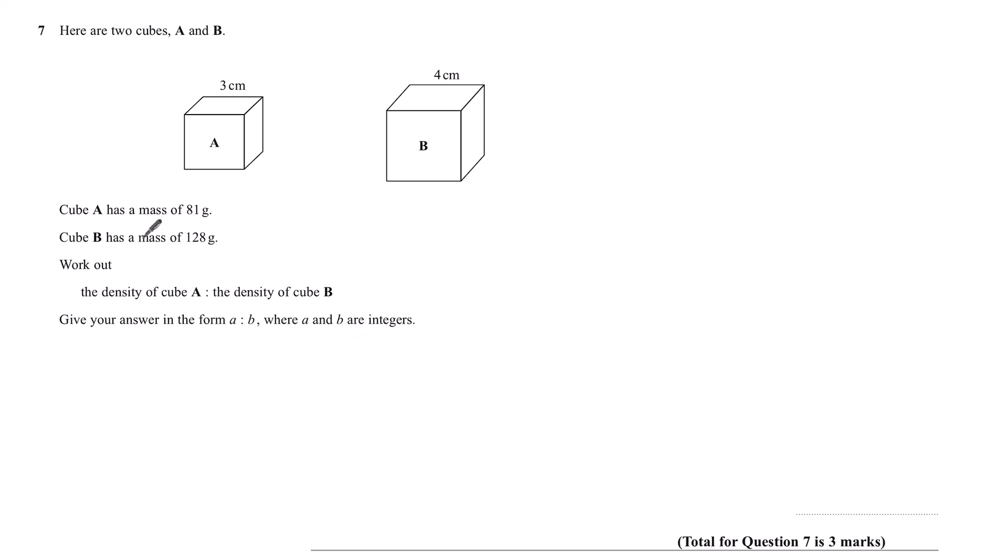So density then, mass and cubes. We have a formula for density, mass and volume. Density equals mass divided by volume. Or using your triangle, mass equals density times volume, or volume equals mass divided by density.